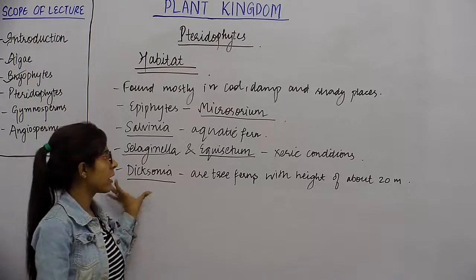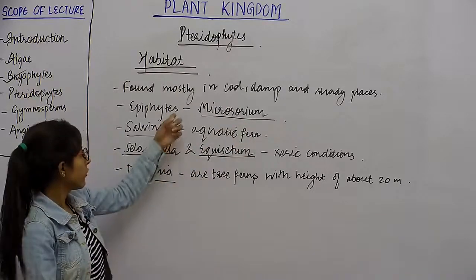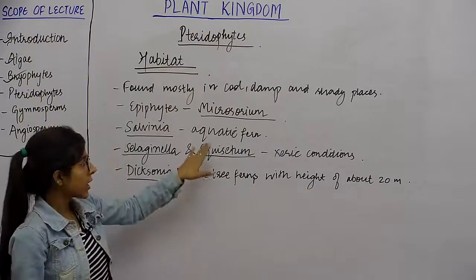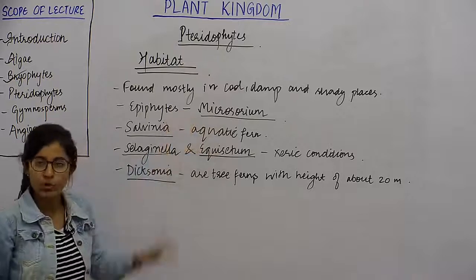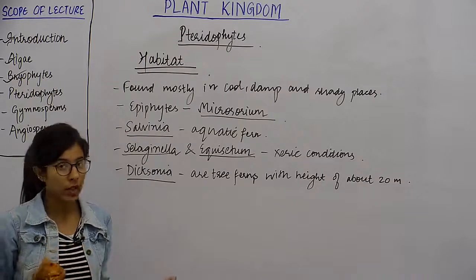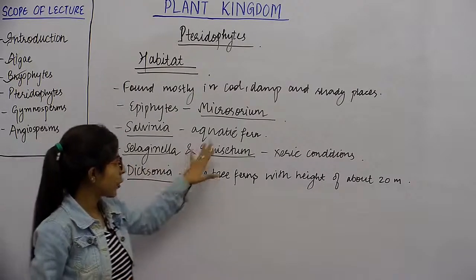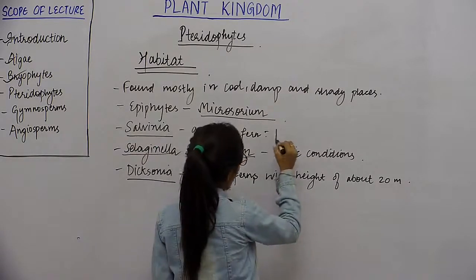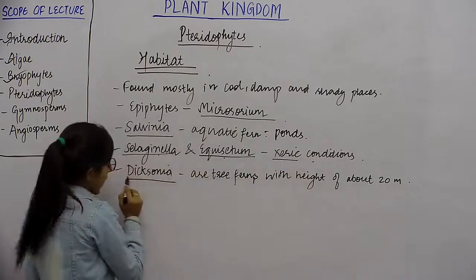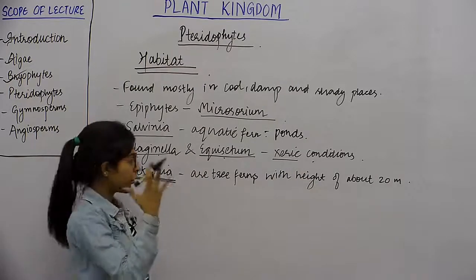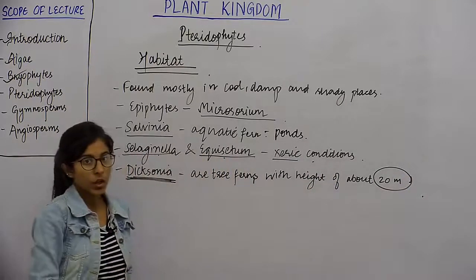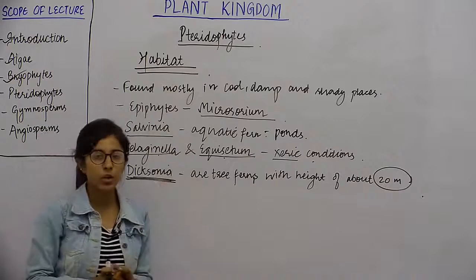Microsaurium is a pteridophyte which grows as an epiphyte — epiphyte matlab jo doosre plants pe grow karte hain, but it is nutritionally independent, so it does not take nutrition from the host. Salvinia is an aquatic fern which grows in ponds. Selaginella and Equisetum are found in xeric conditions, and Dicksonia is a very huge tree fern of about 20 meters height.